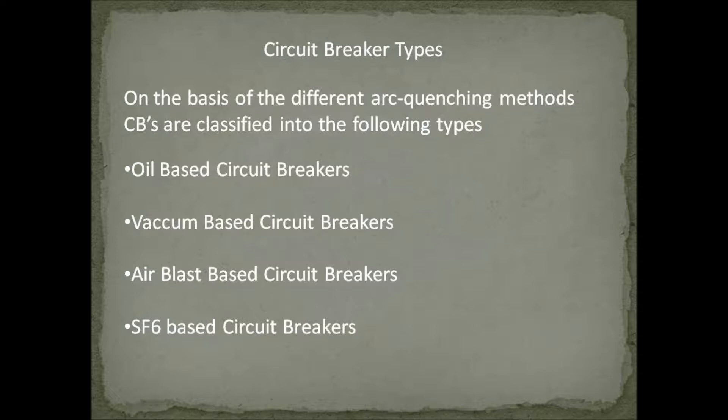All high power circuit breakers employ arc quenching methods. Arcs occur whenever two high voltage contacts are interrupted. Arcs are very dangerous and therefore must be removed. Some arc quenching methods include oil, vacuum, air blast, and SF6 gas. Based on these different arc quenching methods, circuit breakers are also classified.